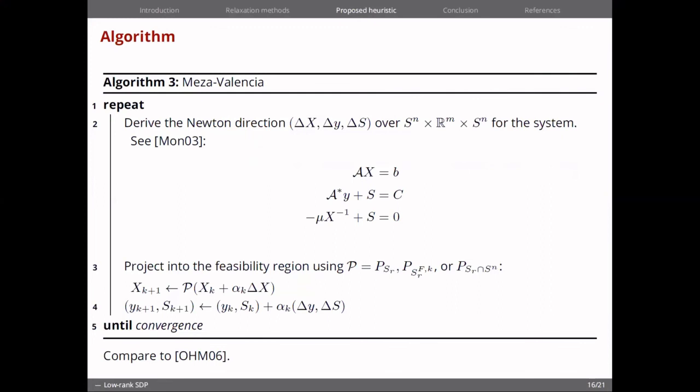And once we have this Newton direction, we are going to recover feasibility in the low rank region by using the projection of one of these matrices. So, to wrap it up, we are going to compute the Newton direction, and then project onto the feasible low rank region. And this is the essence of the algorithm that we are proposing now.